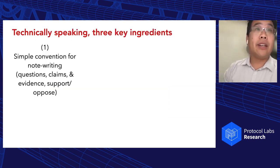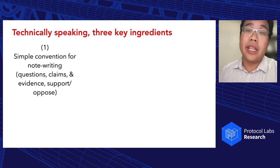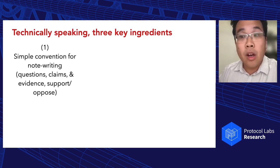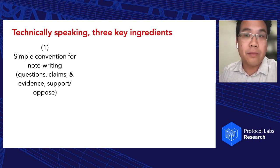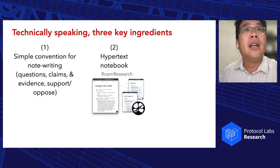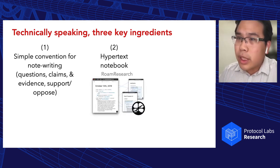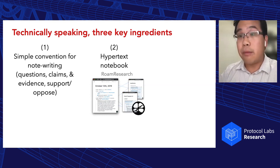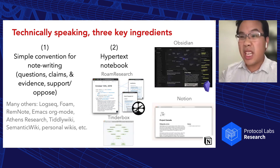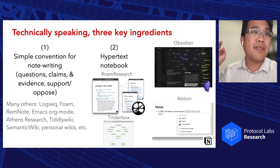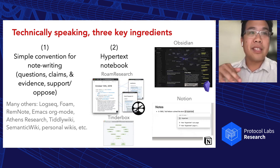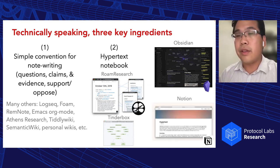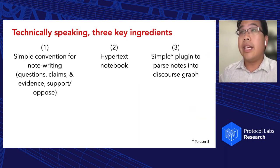Technically speaking, all you need is three ingredients: a convention for writing, which people are actually pretty open to adopting and most already do something like; a hypertext notebook that allows understanding of links between things — this is Roam Research, but we also have Obsidian, Notion, Tinderbox, Emacs, Athens, Logseq, RemNote, and many other tools that can implement this kind of protocol; and a simple plugin that parses the discourse structure.